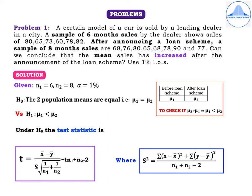In this problem, the word mean is used and we have a sample of 6 months before the loan scheme and a sample of 8 months after a loan scheme was announced. We see that N1 is equal to 6 and N2 is equal to 8, which are less than 30. So this problem is based on T-test for equality of means.